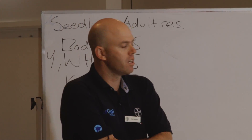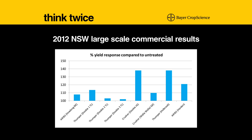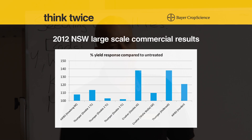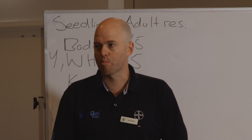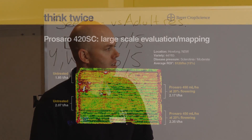This was actually in a reasonable year out of New South Wales last year. There was a bunch of commercial sites done. At the end of the day, we had some really big yield responses at some sites, but a lot were around that 10 to 20 percent range. And that's probably a more realistic expectation of yield responses from sclerotinia treatment, unless you're in a really high pressure zone.